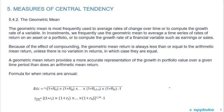The geometric mean is most frequently used to average rates of change over time or to compute the growth rate of a variable. In investments, we frequently use the geometric mean to average a time series of rates of return. Because of the effect of compounding, the geometric mean return is always less than or equal to the arithmetic mean return, unless there is no variation in returns.